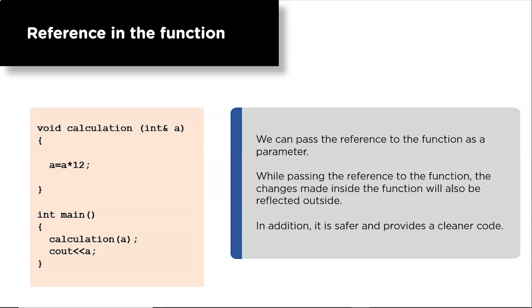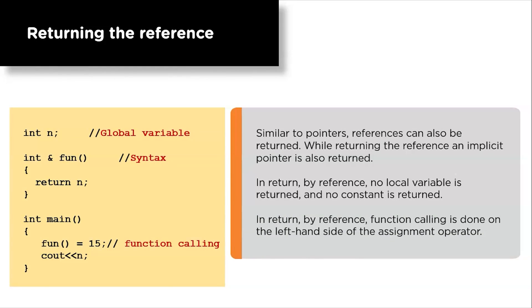Now let's learn about returning a reference in C++. Similar to pointers, references can also be returned. While returning the reference, an implicit pointer is also returned. In return by reference, no local variable is returned and no constant is returned — only a global variable is returned. The function call is placed on the left-hand side of the assignment operator. For example, 'n' is returned from the function — not the value but the address of the variable. When this is returned, the value 15 is assigned to it and then printed.